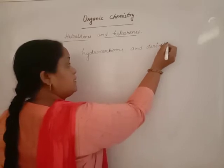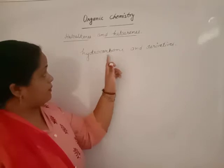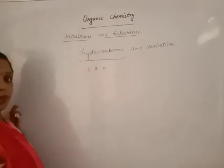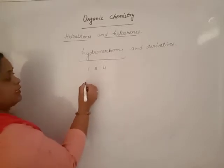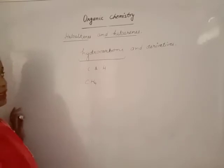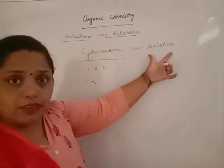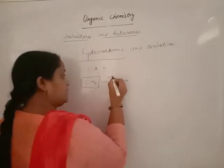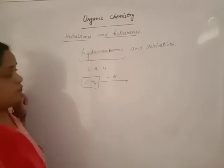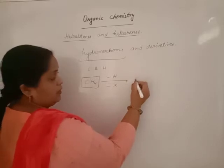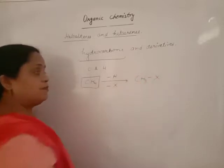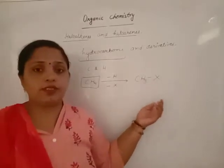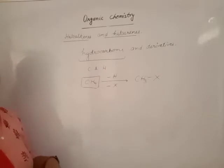What do you mean by the term derivatives? Hydrocarbons are made up of carbon and hydrogen only. The simplest hydrocarbon, as we all know, is methane. Derivative means a hydrogen atom of a hydrocarbon is replaced by any other group — it may be OH, amine, or nitro.